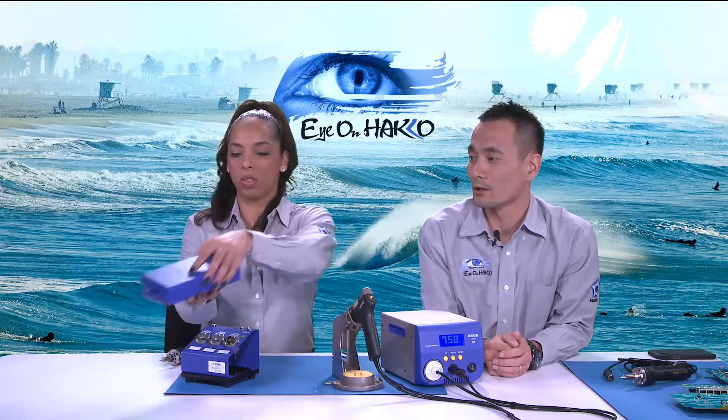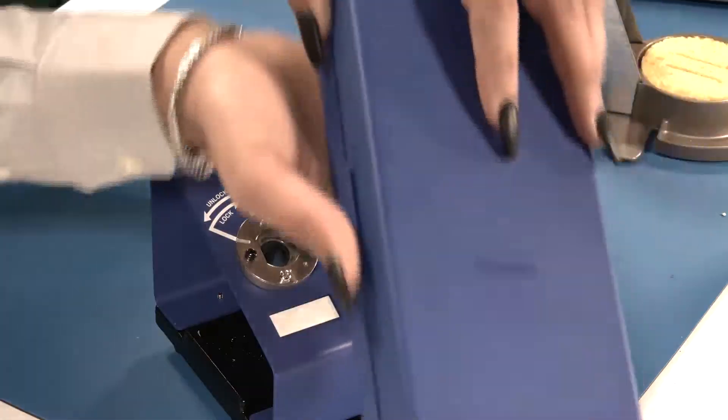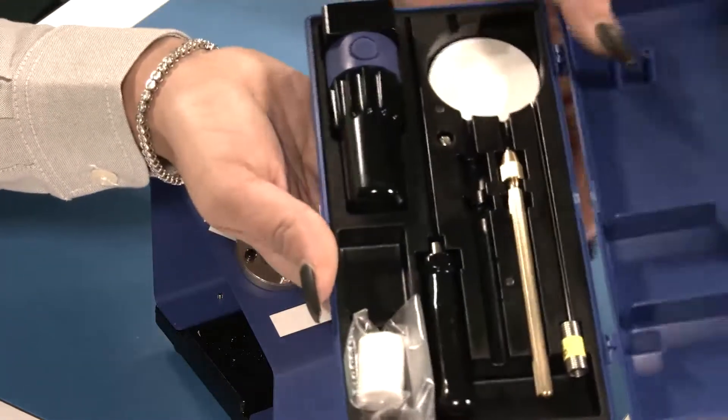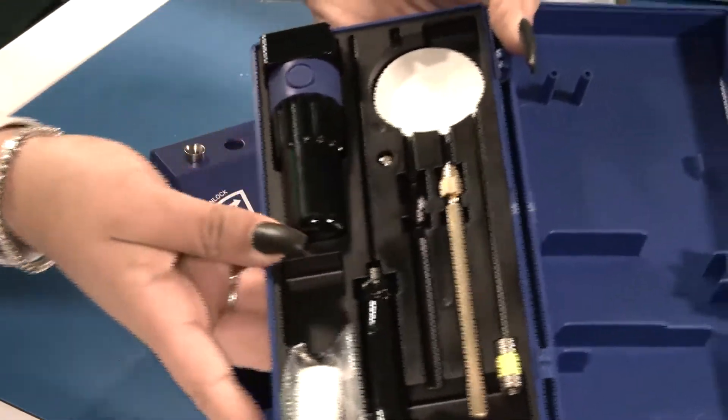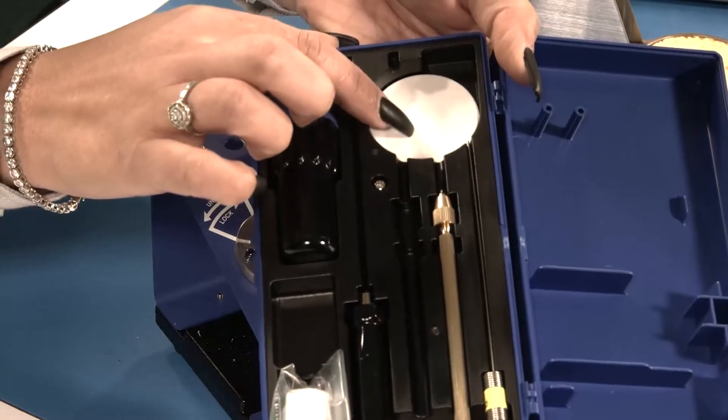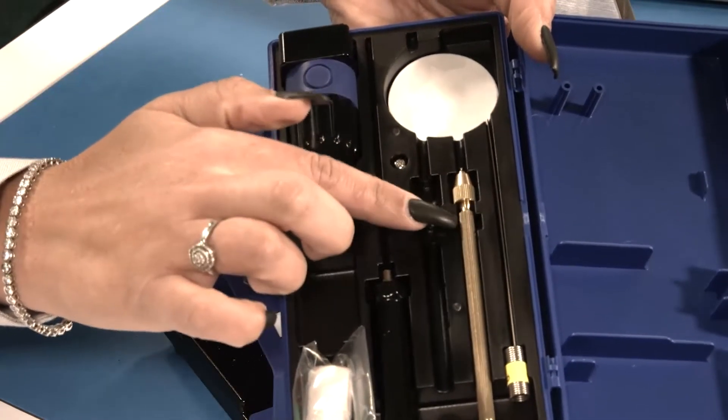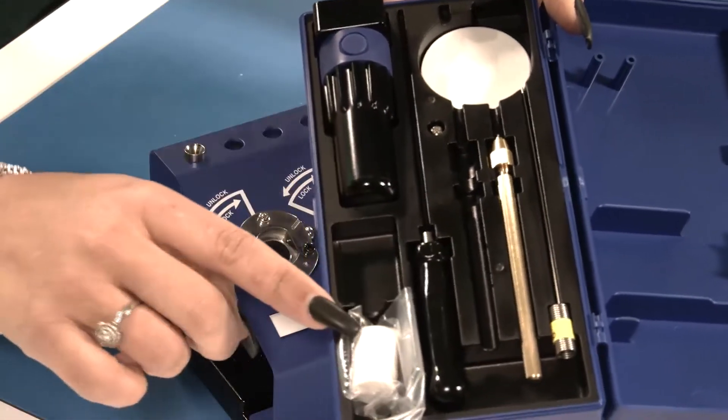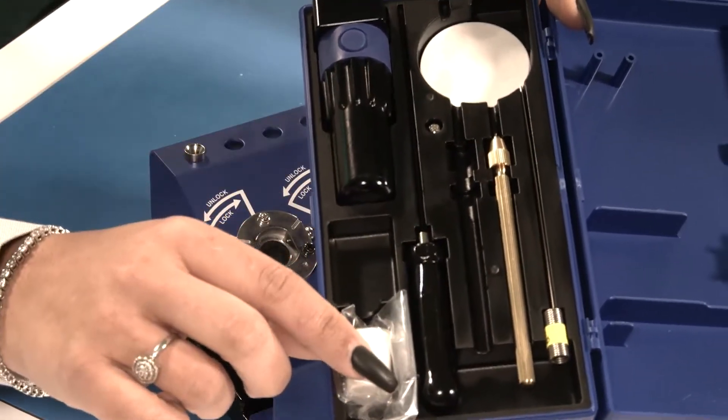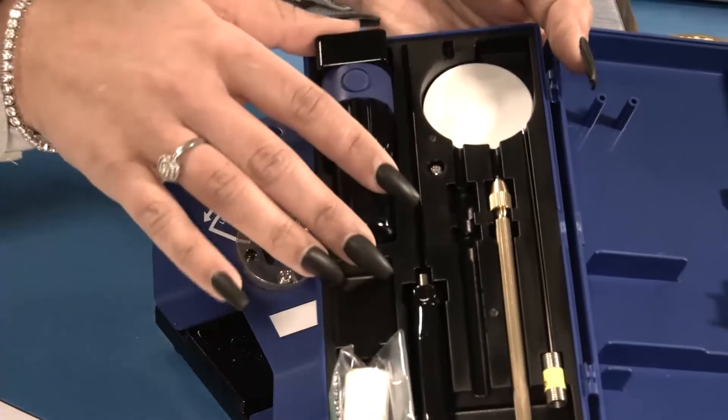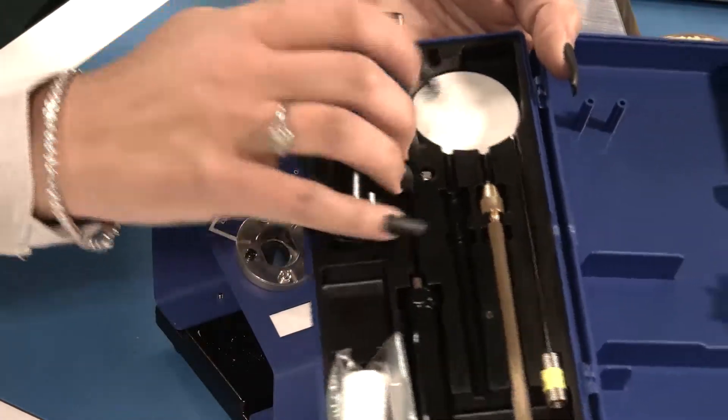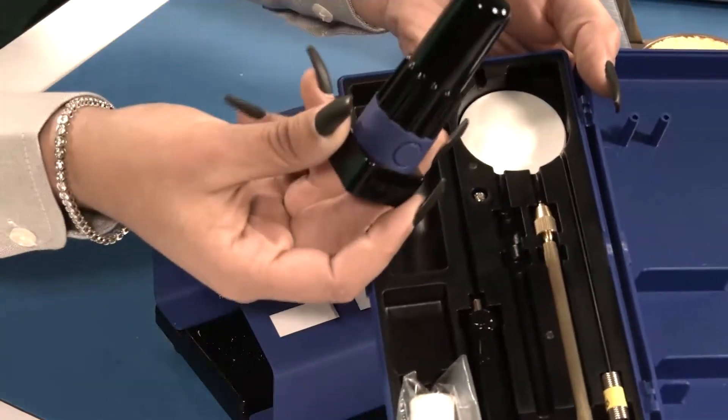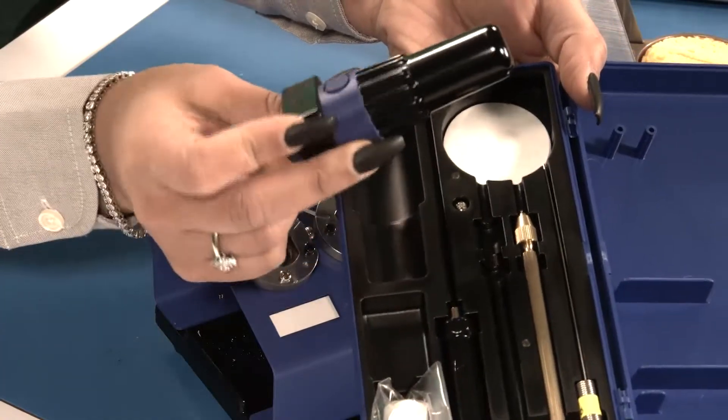And as far as maintenance goes, the stations come with its very own toolkit. It's this box here. And inside the toolkit, it comes equipped with replacement filters for the station, a couple cleaning pins and a cleaning drill. And that is the replacement filter that will go on the handpiece. And that is the nozzle wrench, which is used to replace the nozzles on the desoldering tools.